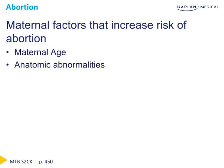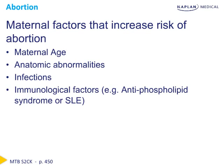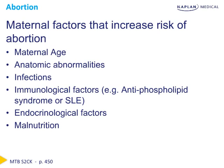In addition to the anatomic abnormalities discussed, there are other maternal risk factors which increase the risk of abortion. The infectious risks include HIV, syphilis, chlamydia trachomatis, and listeria monocytogenes, all of which have been associated with spontaneous abortion. There is also a possible role for mycoplasma hominis and ureaplasma urealyticum. There are also immunologic factors, endocrine factors such as uncontrolled thyroid disease resulting from thyroid autoantibodies or uncontrolled diabetes, as well as malnutrition and trauma.